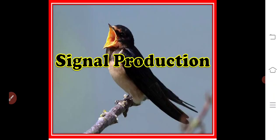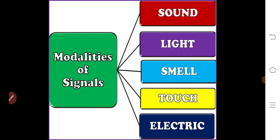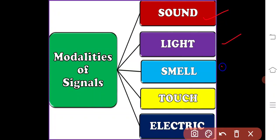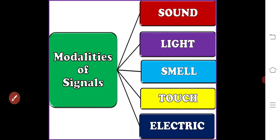Coming to signal production, the challenge faced by a sender is the creation of a controlled perturbance of the environment that can be detected and recognized by a receiver. There are different modalities of signals. Usually the signals may be in the form of sound, light, smell, touch, and electric in nature. These all are the modalities of signals.